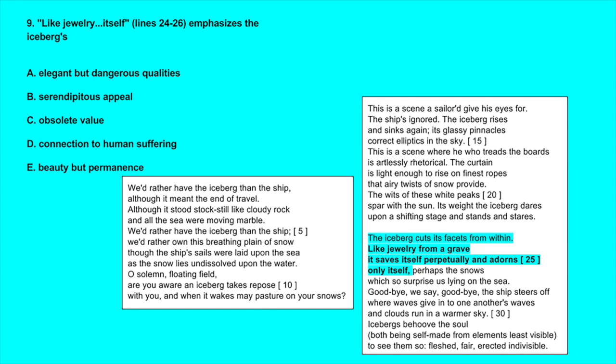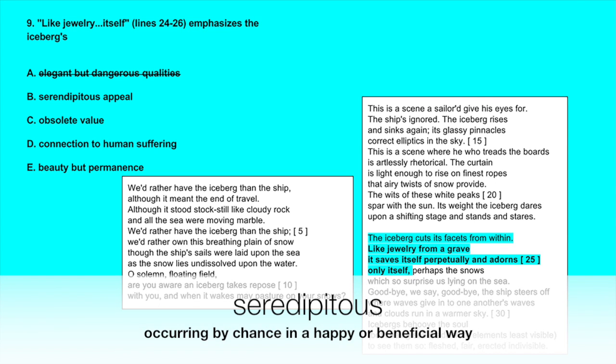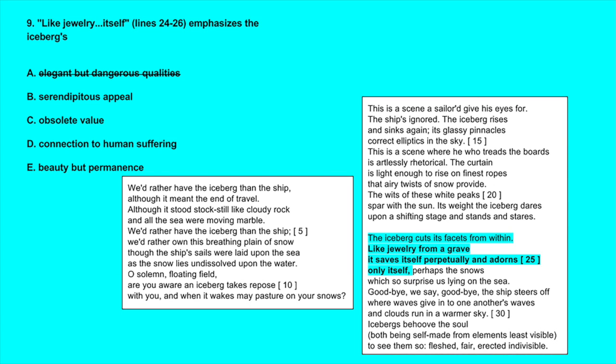B, serendipitous appeal - serendipitous means occurring or discovered by chance in a happy or beneficial way, and there isn't anything here that indicates that the iceberg was discovered by happy chance, so this doesn't really make sense. C, obsolete value - no, obsolete means no longer used because it's out of date. This doesn't make sense.